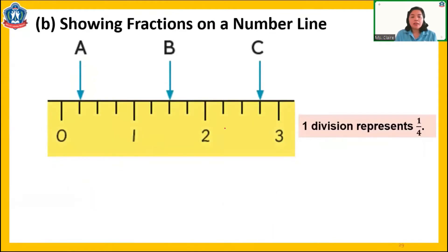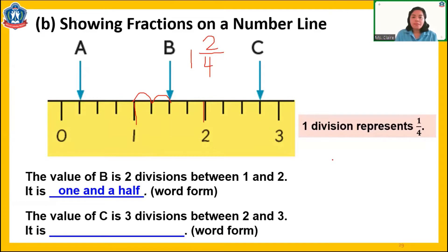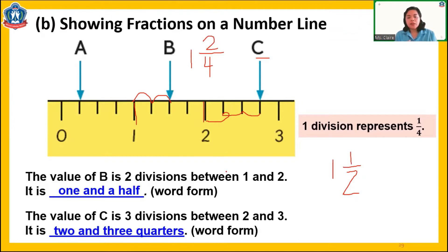How about the value of B? The value of B is two divisions between one and two — two divisions. Therefore it is one and a half. It could also be one and two quarters. Remember equivalent fractions? One half is equal to two quarters. So in number form, that is one and a half. How about the value of C? C is between two and three, and there are three divisions from two. So that is two and three quarters. This is how to read fractions on a number line or on a scale.